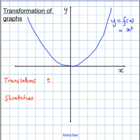There is a third type, reflection, but we can think of those as being multiplying or dividing by a negative number. Okay, let's look at translations first.